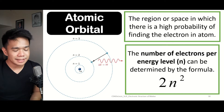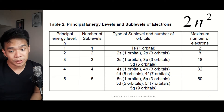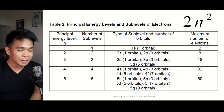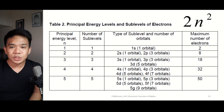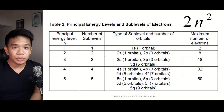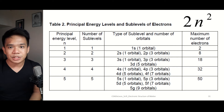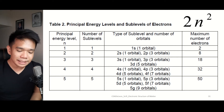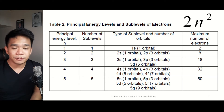The number of electrons per energy level is determined using 2n². In the first principal energy level where n equals 1, so 1 squared is 1 times 2, giving a maximum of 2 electrons. For the second energy level, 2 squared is 4 times 2, which equals 8 electrons. The same goes for the third, fourth, and fifth energy levels, with 18, 32, and 50 electrons respectively.